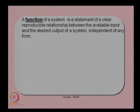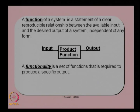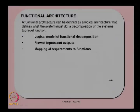A function of a system is a statement of a clear reproducible relationship — you can consider it as a block where the input is coming in and the output is going out, and the relationship between this input and output is the function. A functionality is a set of functions required to produce a specific output. For example, if an elevator has to provide the service of transporting passengers, it needs many functions in order to give that specific output — that set of functions is the functionality of the system.